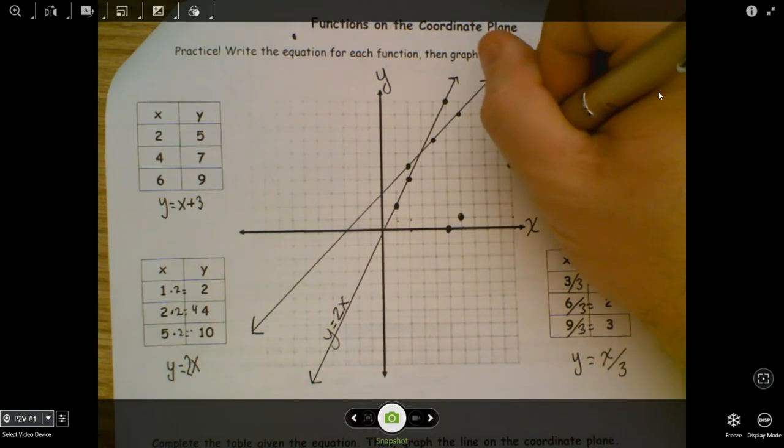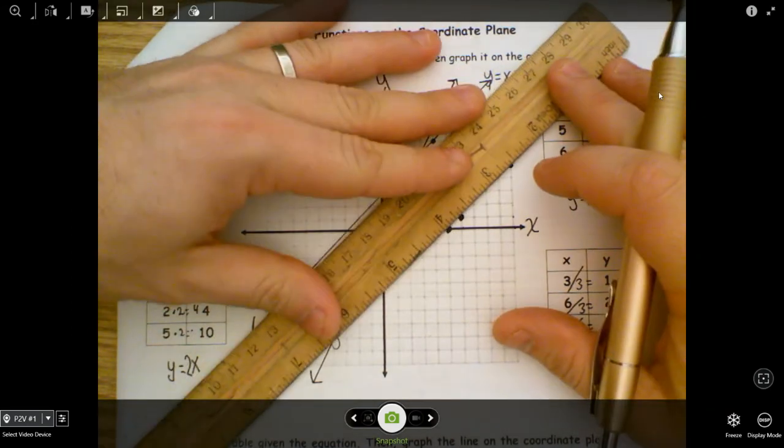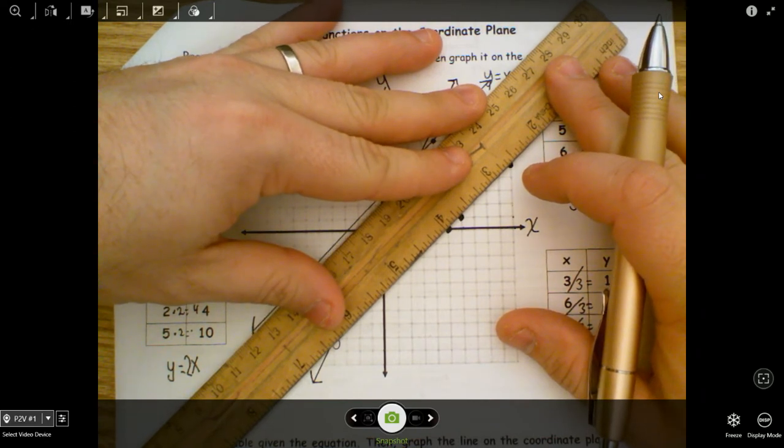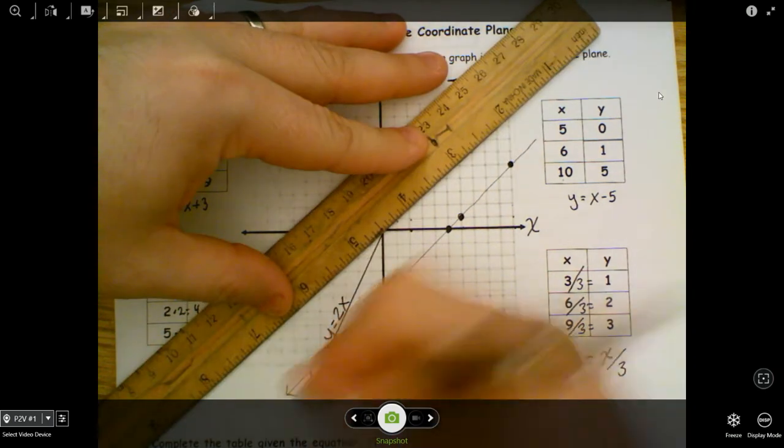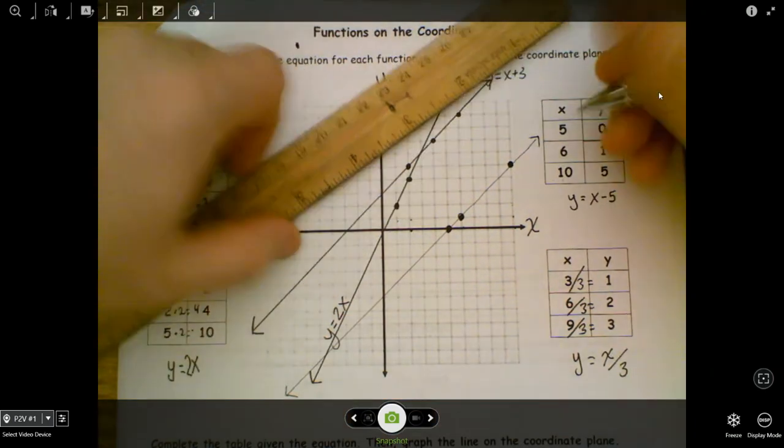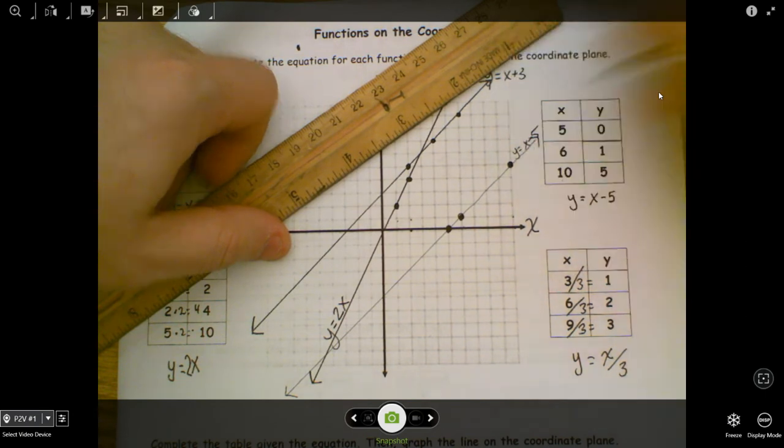You usually want to have three dots, but you can get away with two dots. Once I have three dots, I know I can make a nice straight line. Come through. And then I want to label it here at the end somewhere. Y equals X minus 5. That's this line.